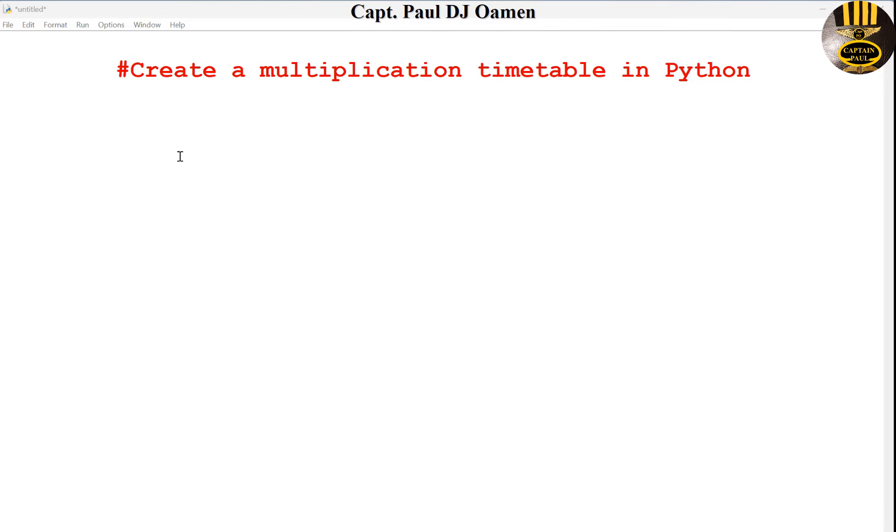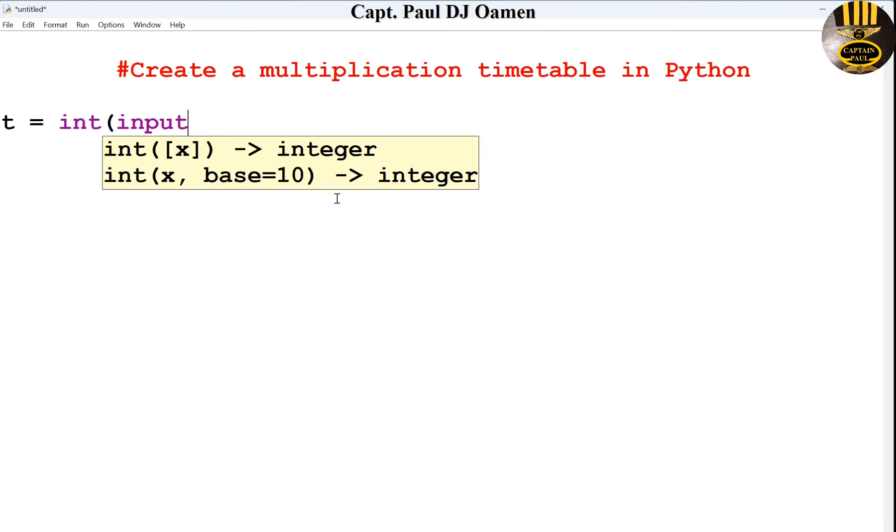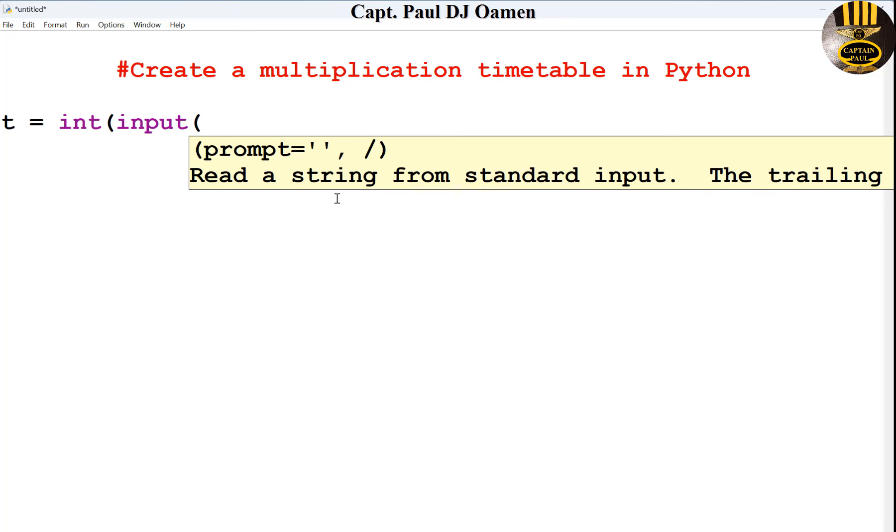Hi guys and welcome to Python tutorial. In this tutorial we learn how to create a multiplication timetable. First of all, I'm going to start by declaring a variable I'll call T, and this T I want you to take in an integer value. So I'm going to say int, open up a bracket, take in as input. Let's say enter